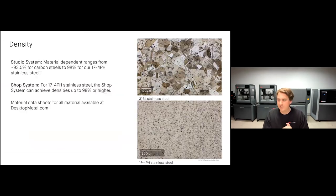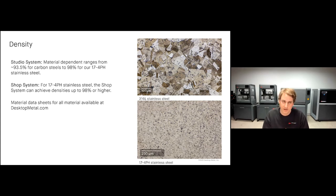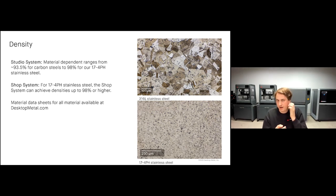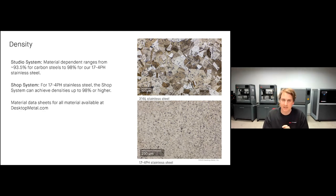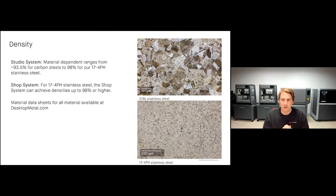Regarding density: on the Studio System, densities vary — carbon steels are usually about 93.5% and higher, while 17-4 PH stainless steel is 98% and up. On the Shop System, currently printing in 17-4 PH stainless steel, we're achieving densities of 98% or higher. All material data sheets are available on our website.